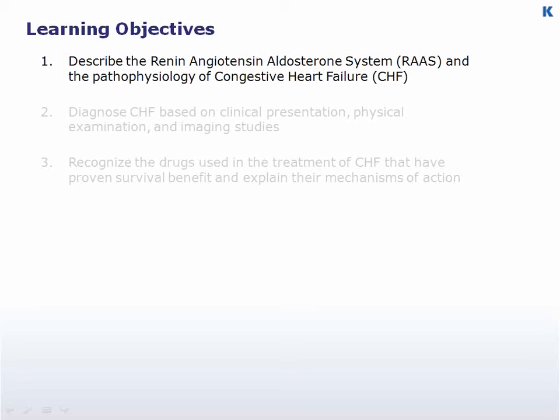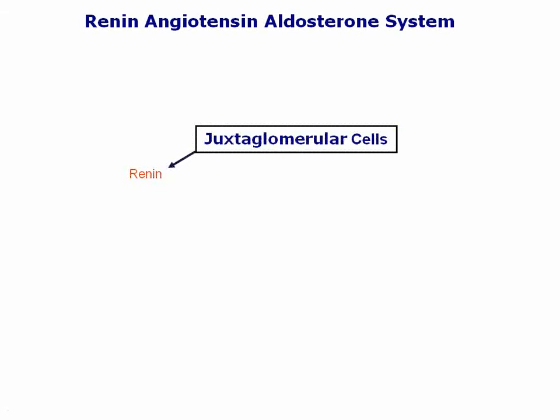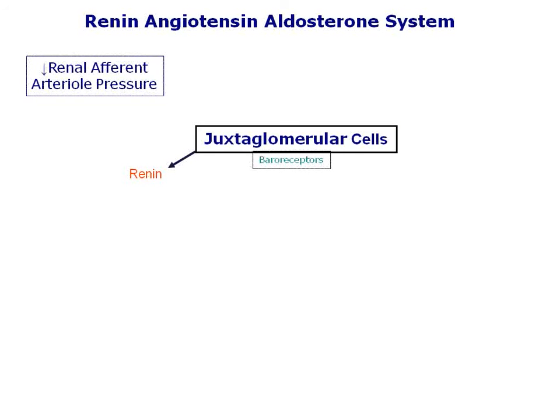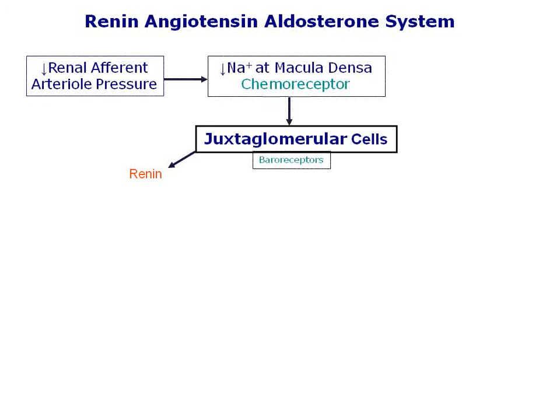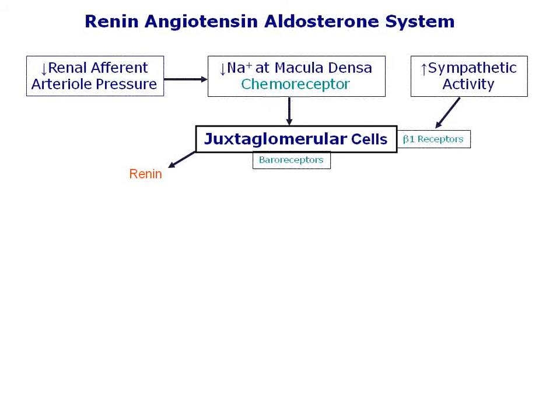Effective cardiac performance is dependent, in part, on the kidney's control of circulating blood volume. In the kidney, secretion of the enzyme renin by the juxtaglomerular cells is the key step in the regulation of fluid and electrolyte homeostasis and blood pressure. There are three mechanisms that control renin secretion: the baroreceptors of the juxtaglomerular cells of the afferent arterioles, the sodium concentration at the macula densa in the distal convoluted tubules, and sympathetic innervation of the kidney by the beta-1 adrenergic receptors of the juxtaglomerular cells.